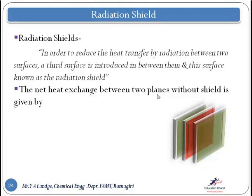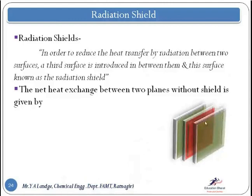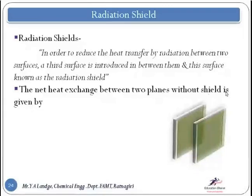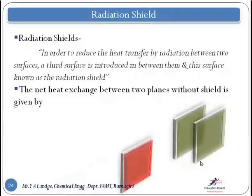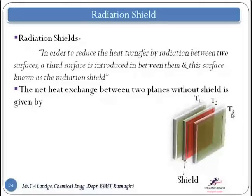Now we derive what is the effect on heat transfer when there is no shield, and when we introduce a third surface (the radiation shield), what will be the effect between the first plane and the third plane. First, we write the net heat exchange between two planes without a shield. Let T1 be the temperature of the first surface, T2 the temperature of the radiation shield, and T3 the temperature of the third surface.